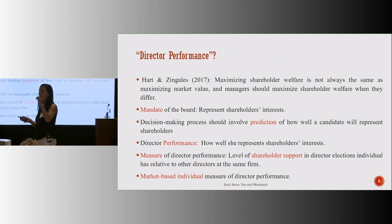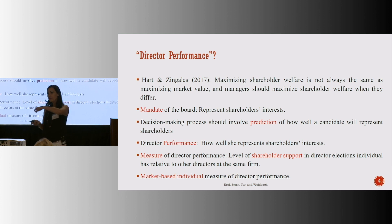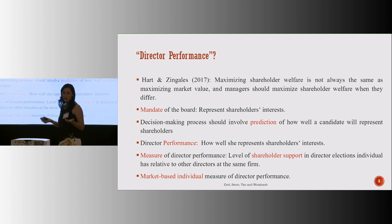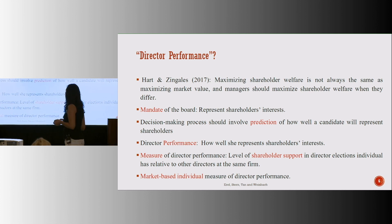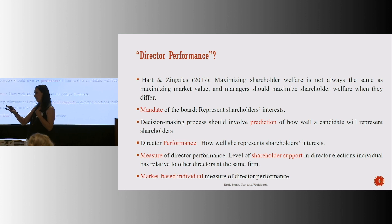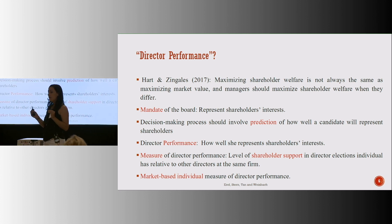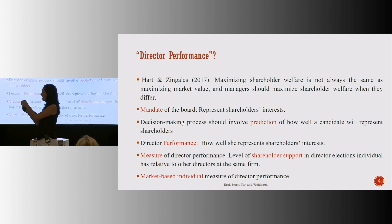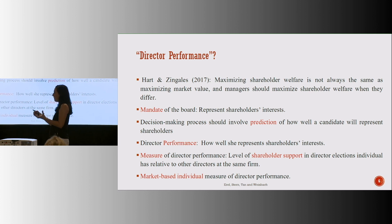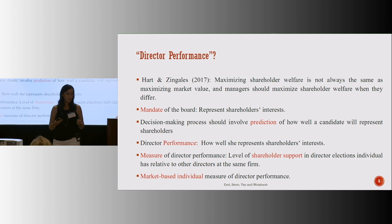I said that we give the algorithm the task of predicting future director performance. Maybe surprisingly, this is a very nebulous concept, and there is absolutely no consensus in the literature as to what that should be. But in our case it's crucial — there has actually been some discussion yesterday about the fact that if the algorithm is trying to predict an outcome, you better make sure that that outcome is something you really care about. Our measure of director performance is actually crucial to the exercise.